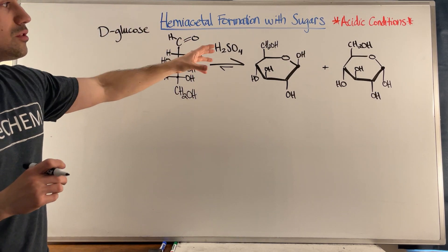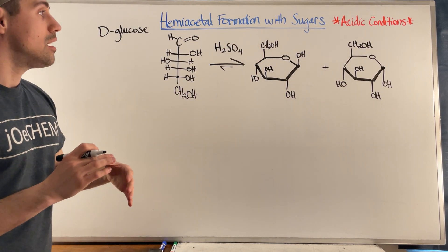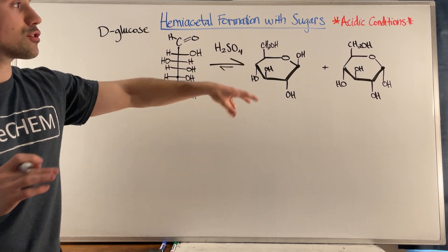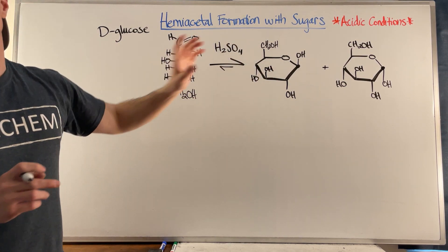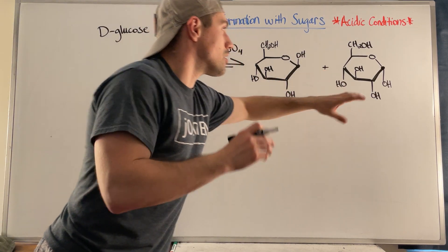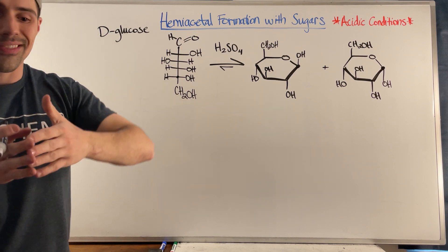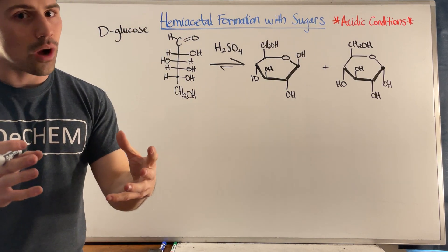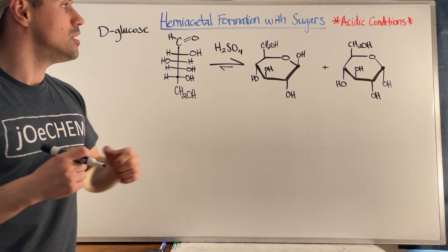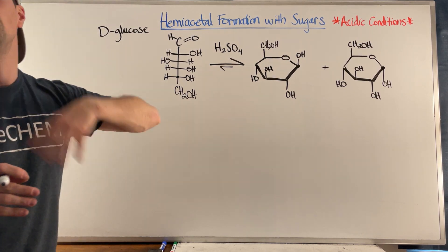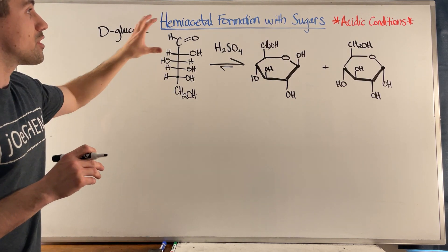It'll get attacked, and you produce two products here - two different versions of the cyclic version of D-glucose. This is also in a conformation, a form that you haven't seen before, called Haworth Projections. This video and the one that comes right after it - definitely watch them together, like a one-two punch.